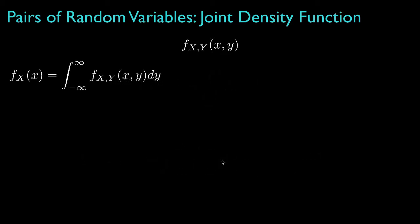Now, if we integrate the density over one of the variables, in this case Y, the result is called the marginal density for the other random variable. Here, for example, is the marginal density for the random variable X, and here's the marginal density for the random variable Y.